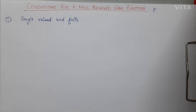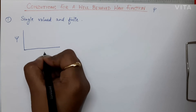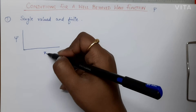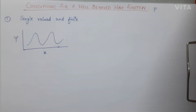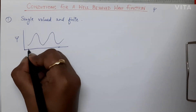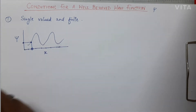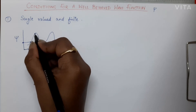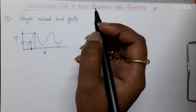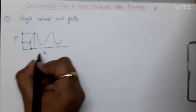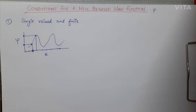What are single-valued and finite wave functions? Suppose I have a wave function and I draw a graph of psi versus x. On plotting the values of x I get some psi values, forming a wave function. For a specific value of x, I get a specific single value of psi at that point — finite, not infinite. This means it is a single-valued and finite wave function.